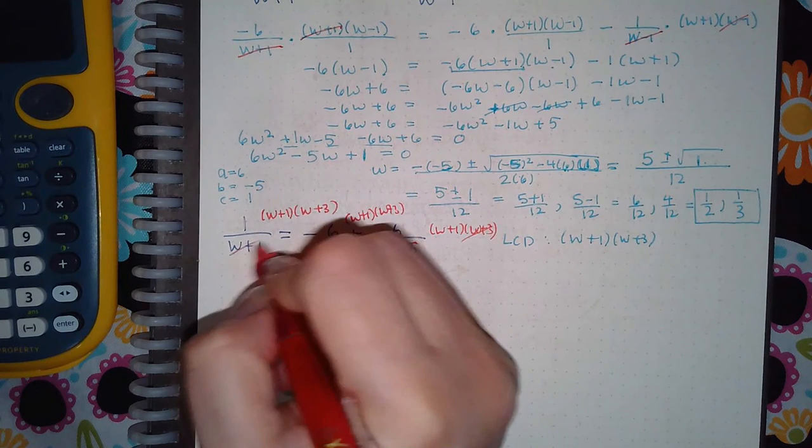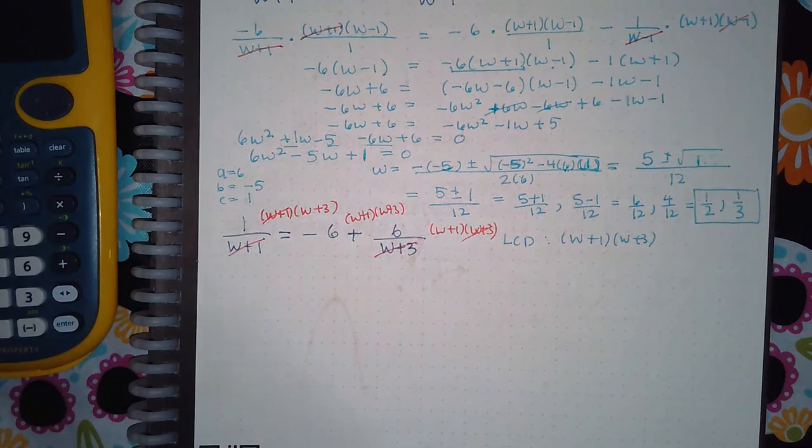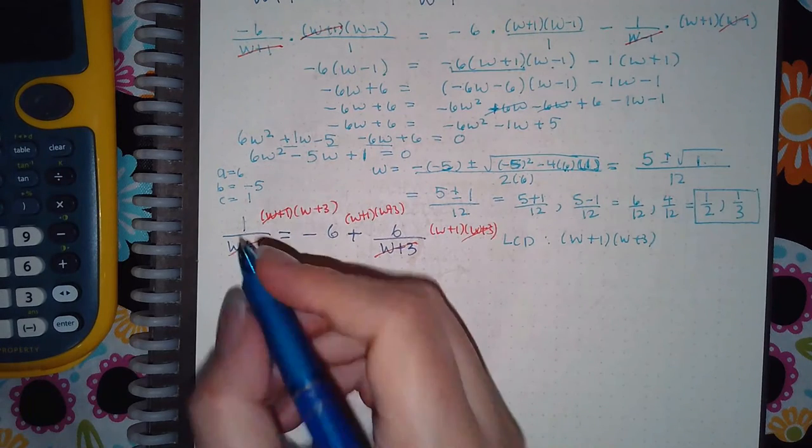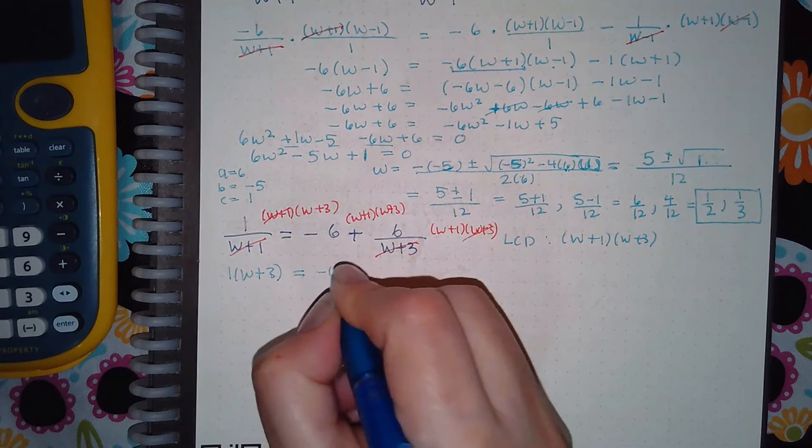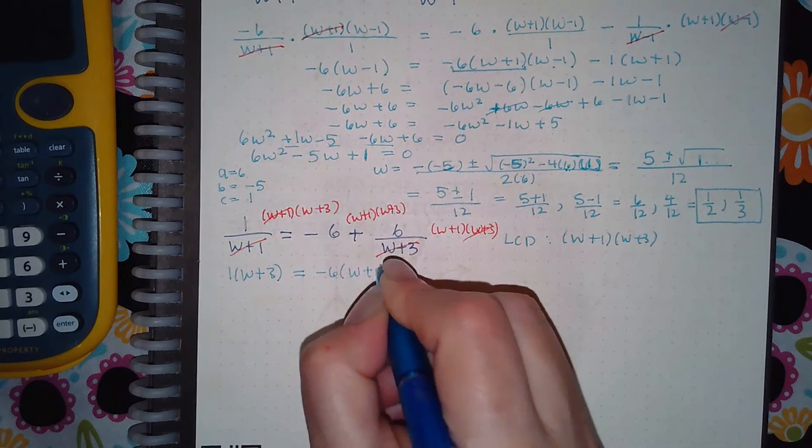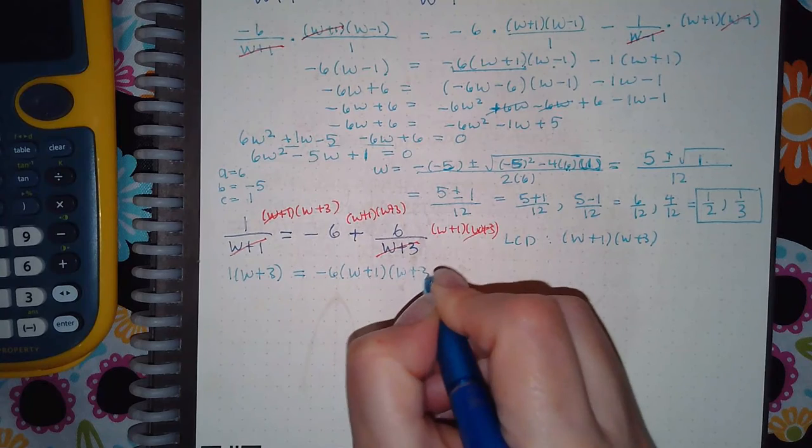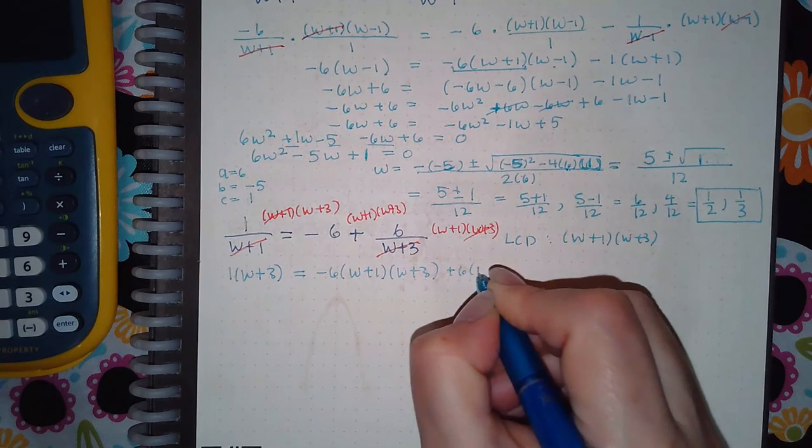Nothing cancels on this term. And here, the w plus ones cancel. So what am I left with? I'm left with 1 times w plus 3 equal to negative 6 times both of these factors plus 6 times w plus 1. And then I go on to distribute.